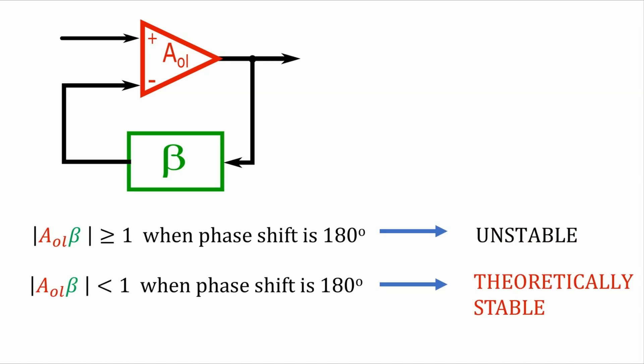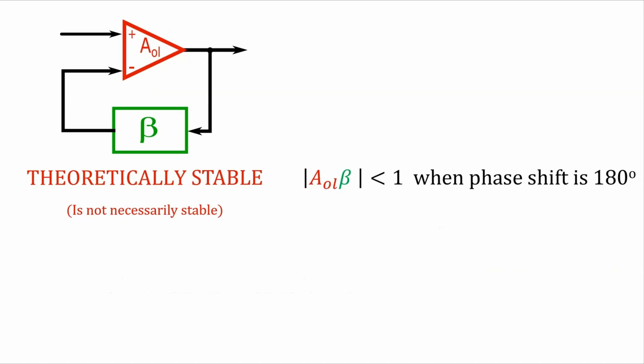However, if the magnitude of the loop gain is less than 1 when the phase shift of the loop gain is 180 degrees, then the system is theoretically stable. This means that in a theoretically perfect system, you would have stability. But in the real world, the system may or may not be stable. And this is for several reasons.